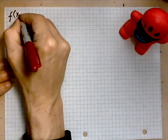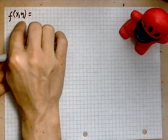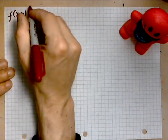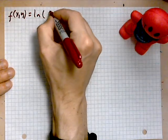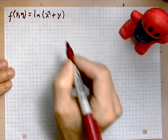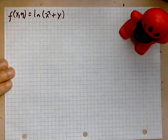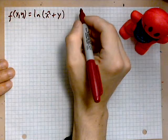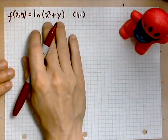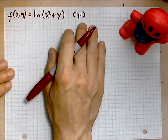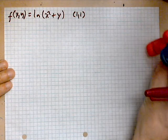So you have f of xy, that's our function f of the variables x and y, defined by ln(x² + y²). And the point here is (1,1). So we will find the gradient at the point (1,1). So let's take a look at what we have.